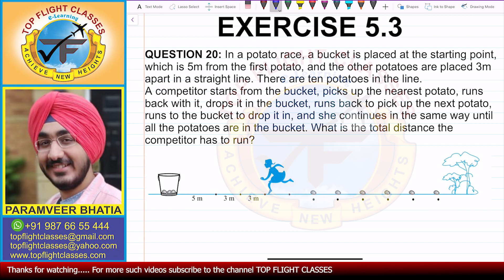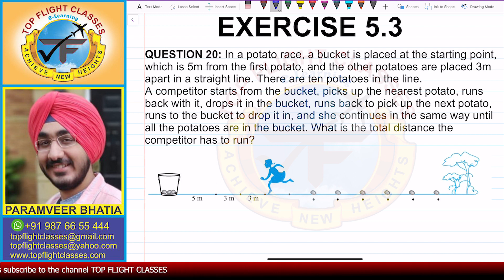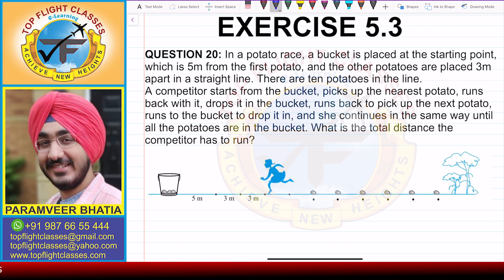There are 10 potatoes in the line. A competitor starts from the bucket, picks up the nearest potato, runs back with it, drops it in the bucket, runs back to pick up the next potato, runs to the bucket to drop it in, and she continues in the same way until all the potatoes are in the bucket.